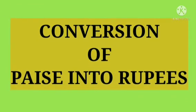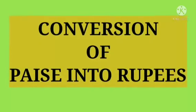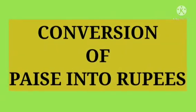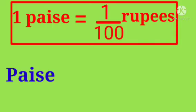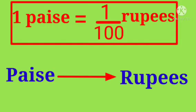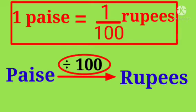Next let us learn conversion of paise into rupees. We know 1 paise is equal to 1 hundredth of rupees. So to convert paise into rupees, we have to divide by 100.